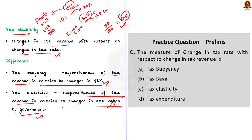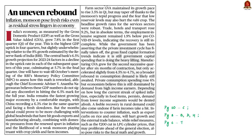Tax buoyancy and tax elasticity are important for governments because they help determine tax revenue. A buoyant tax system will help governments meet their revenue targets without increasing the tax rate and will also help policy makers make better decisions about tax policy. In this discussion we covered two basic concepts in economy: tax buoyancy and tax elasticity.